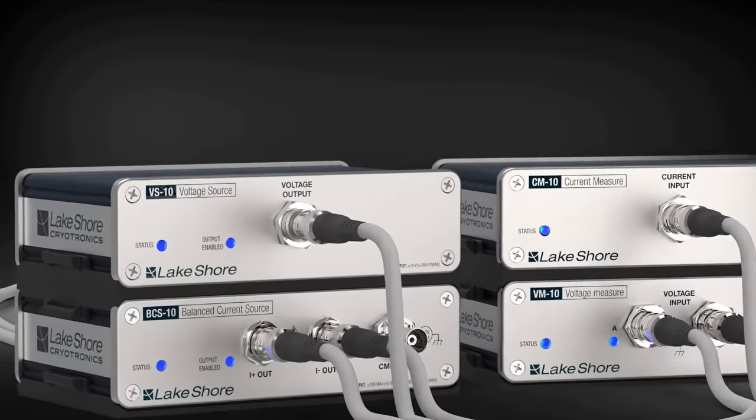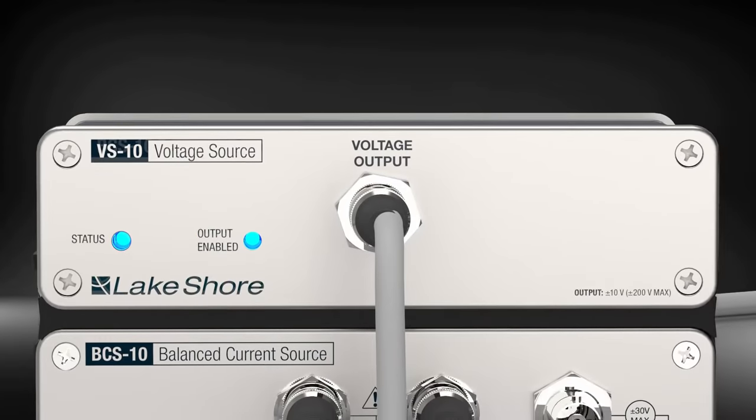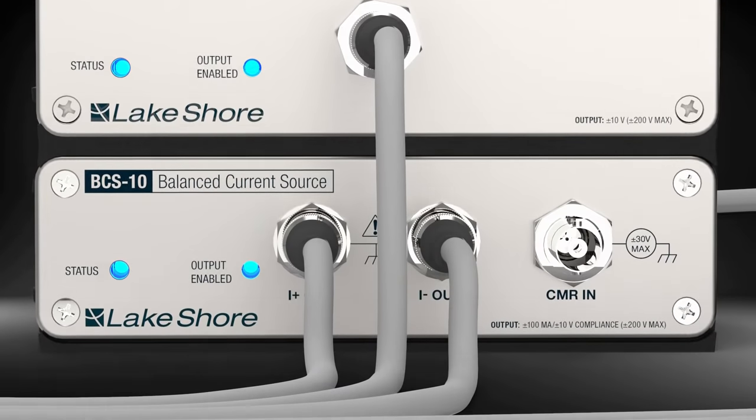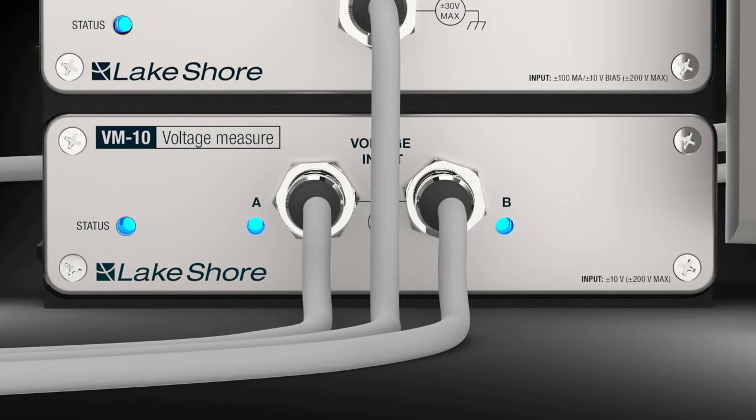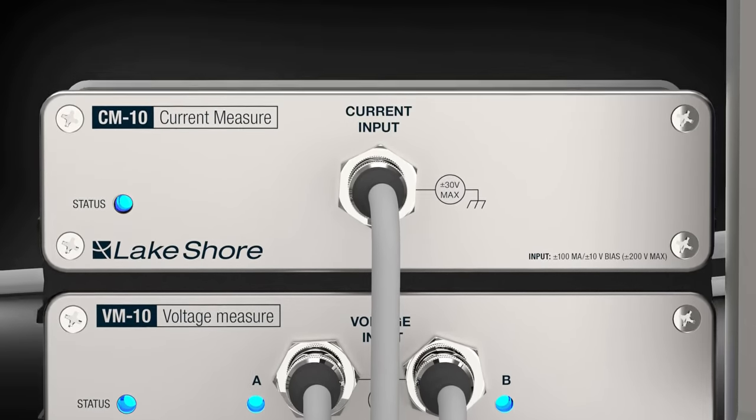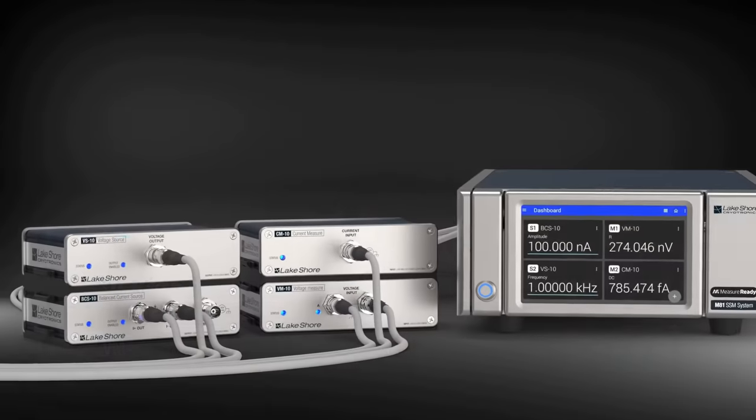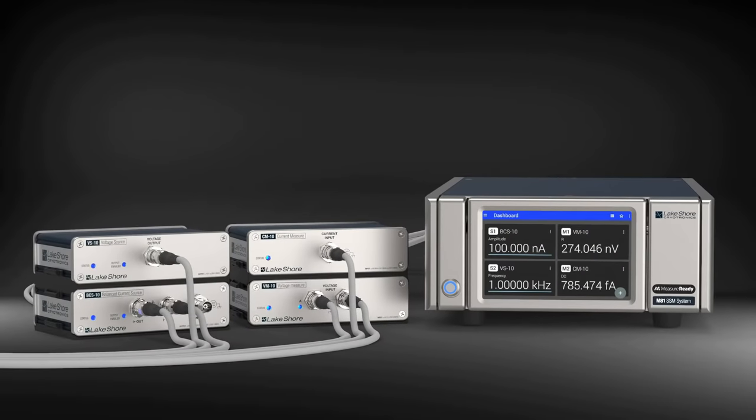Modules initially available for the M81 ecosystem include a voltage source, current source, voltage measure module, and a current measure module. More module types are planned to expand signal type and range coverage, so the M81 provides future expandability options.